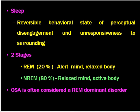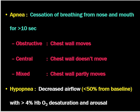OSA is often considered a REM-dominant disorder. During REM sleep there is a relaxed body and alert mind. This relaxed body leads to muscle relaxation, and when there is relaxation of muscles at the level of the tongue, pharynx, or posterior part of the nose, that leads to sleep apnea syndrome. Apnea is defined as cessation of breathing from nose and mouth for more than 10 seconds.